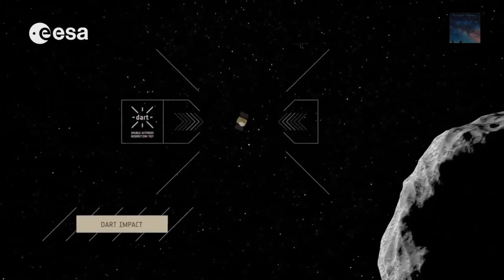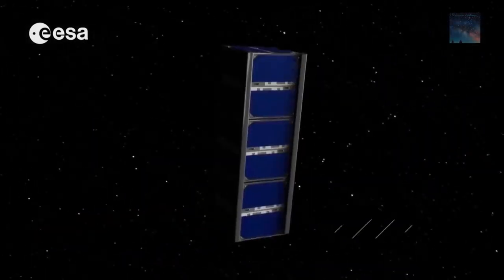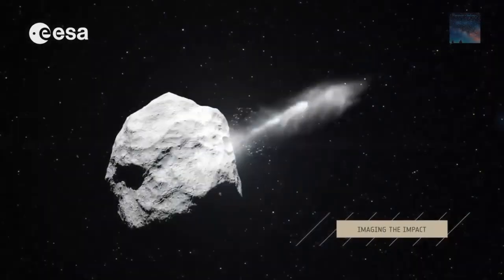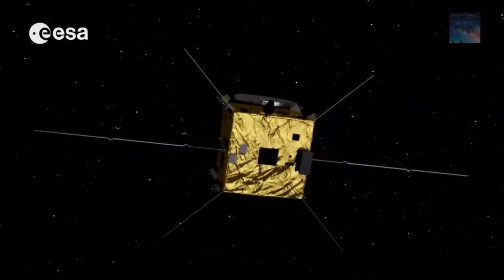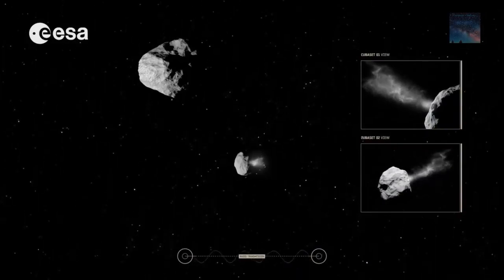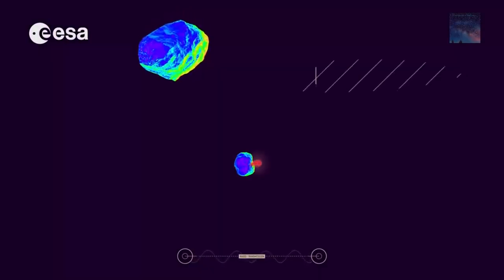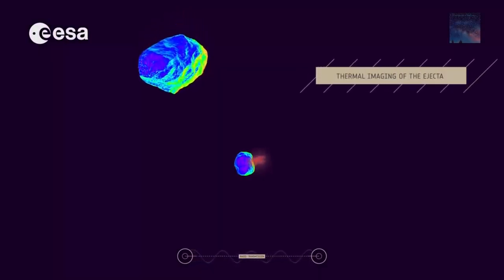Didymoon will become the smallest asteroid to be visited. The thinking is that if they can successfully achieve this on a small scale, then with the correct calculations this can also be done on much larger scales.